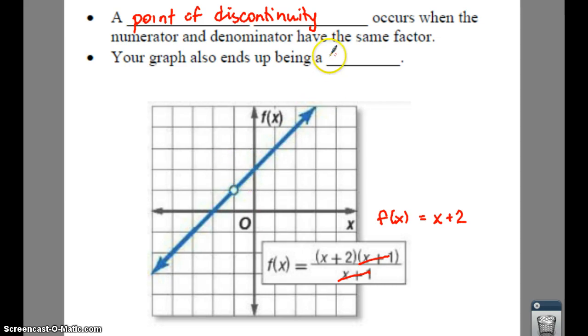Now notice where your hole is. The hole is wherever your factors that cancel, your same factors, wherever they cancel, that is when you set that equal to 0. So if we set x plus 1 equal to 0 and you solve, you would get x equals negative 1. So your hole is at x equals negative 1.